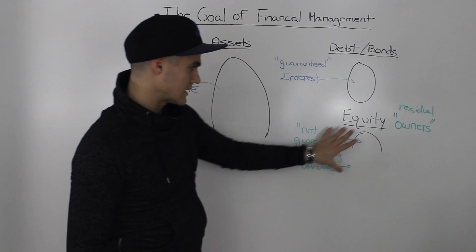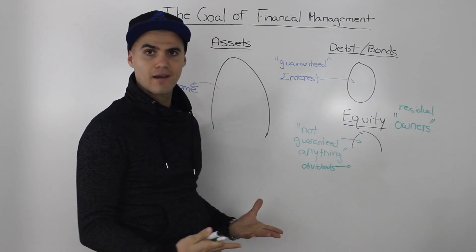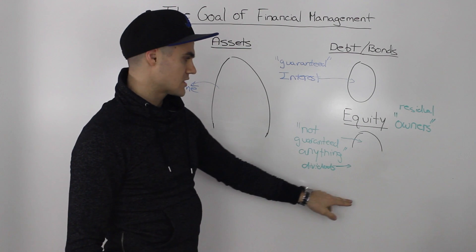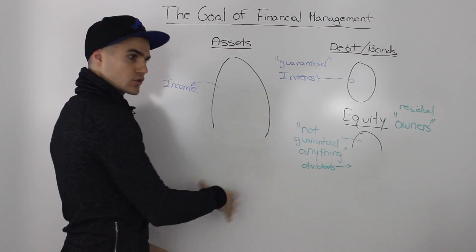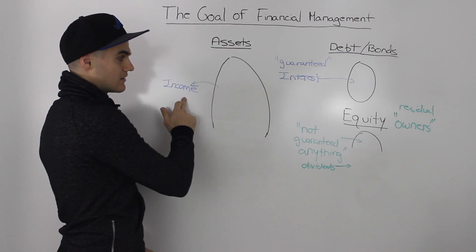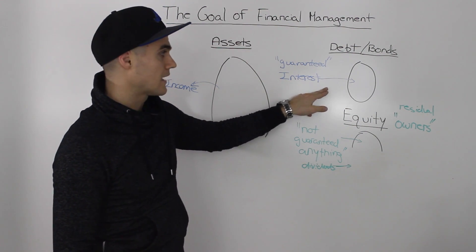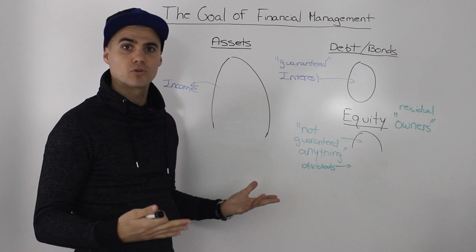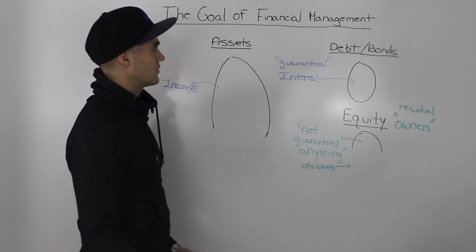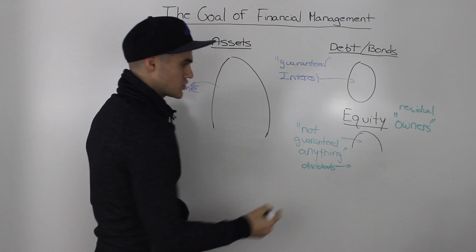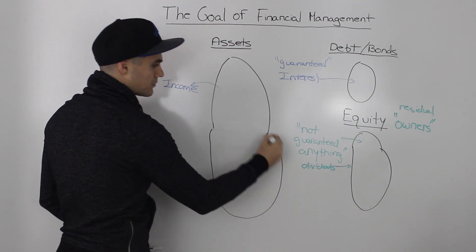Now what if we focus on maximizing the equity value? If we focus on maximizing that equity value, notice how everything else takes care of itself — as the equity value grows, the assets also have to grow because the left side and the right side have to balance. Since the assets are growing, the company is growing, meaning sales and profit are probably going up, debt holders are still getting their guaranteed interest, and the company is growing so it's a more secure work environment overall. So the goal of financial management is to maximize this equity value, which means the company grows as well.